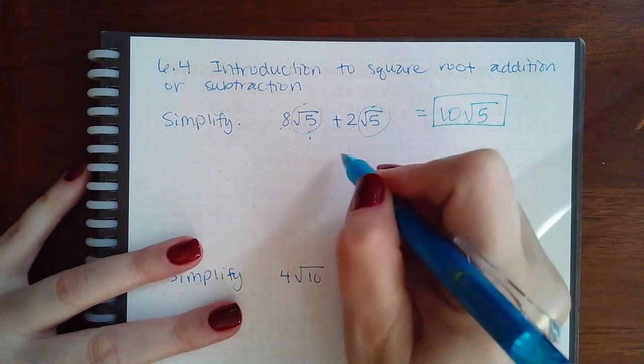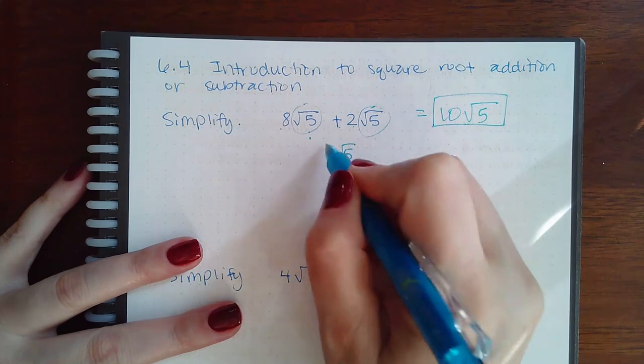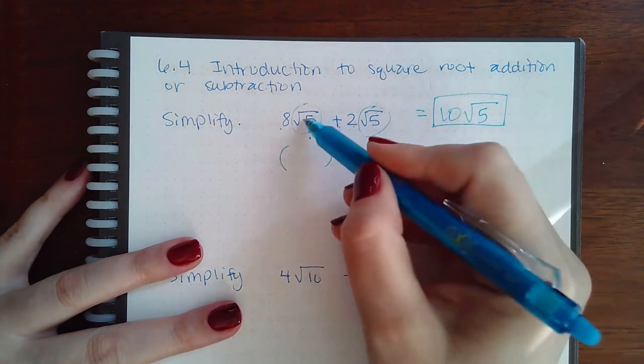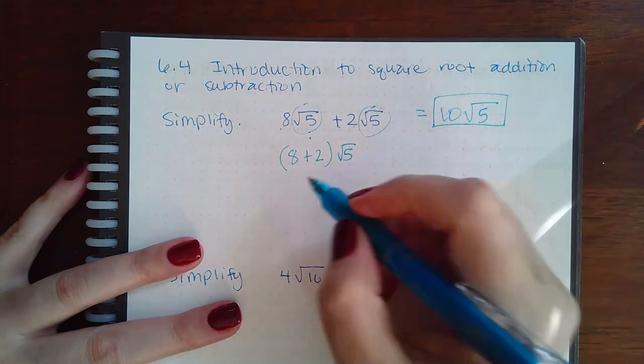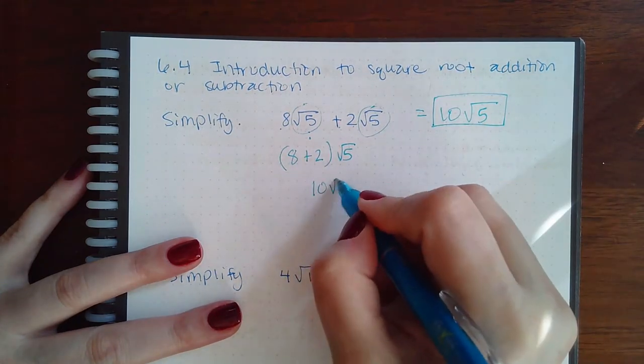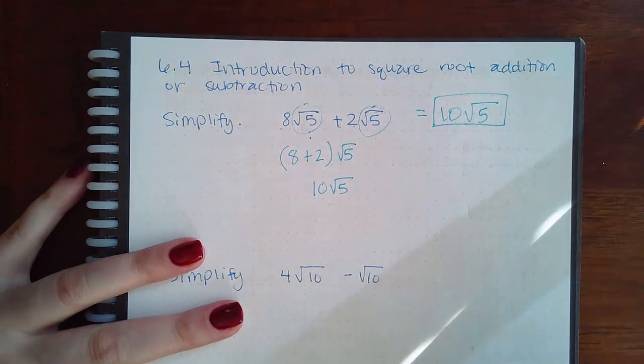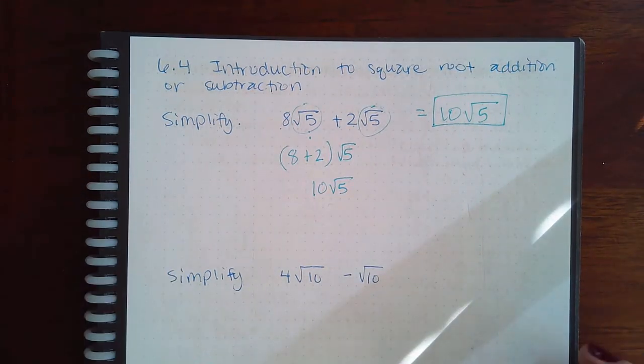Another way you could think about it is if you factored out the square root of five on the right hand side. If I took the square root of five out from both of those, I would have eight plus two, and then that can simplify into ten times the square root of five as well. So whether you're thinking about it as factoring or combining like terms, it's the same thing.